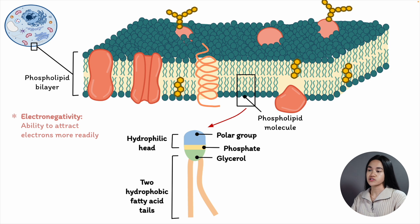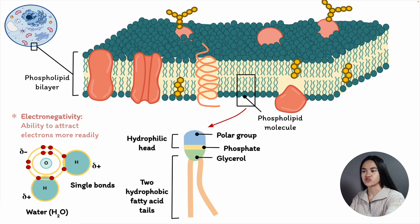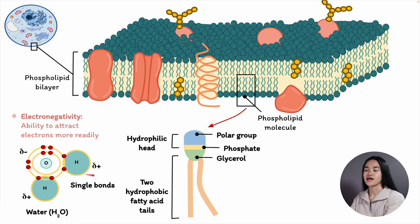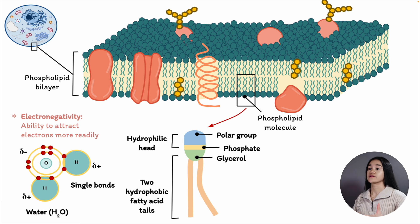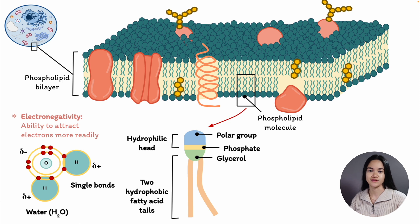In polar molecules, electrons are shared unequally, creating regions of slightly positive and negative charge. For example, in a water molecule, oxygen is more electronegative than hydrogen and attracts electrons more readily. The oxygen has a slight negative charge (delta minus) while the two hydrogen atoms have a slight positive charge (delta plus). With non-polar molecules, atoms share electrons almost equally. Hydrophilic molecules dissolve readily in water because they contain charged or polar groups that form hydrogen bonds with water, whereas hydrophobic molecules are insoluble in water.